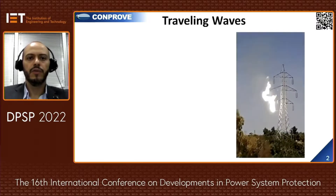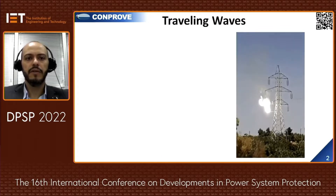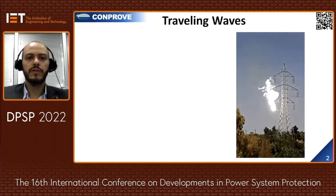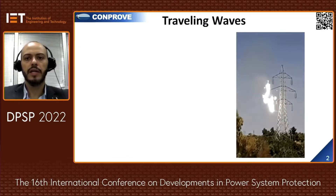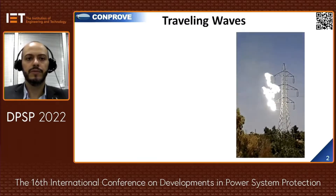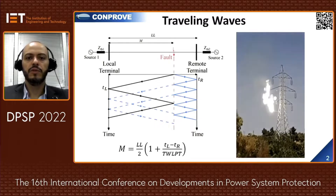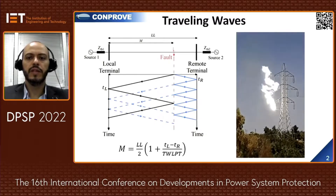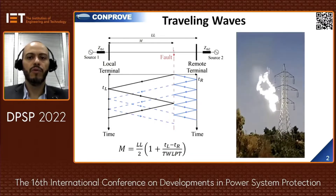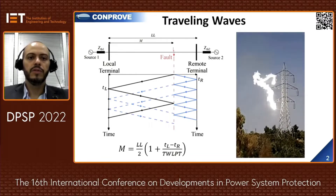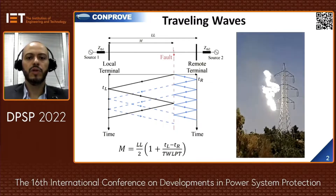First of all, the power system must be better and smarter every day, and traveling waves technology can help this occur by enabling faster trip and high-accuracy fault location. The fault on the transmission line will generate transient waves that propagate at close-to-light speed to both ends; measuring the TW arrival time, it is possible to calculate the fault location.